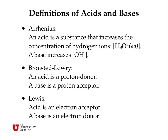There are three definitions of acids and bases. The simplest is from Arrhenius, where an acid increases the concentration of hydrogen ions, written as H3O+, and a base increases the concentration of hydroxide. The Bronsted-Lowry definition is the most practical and common, where an acid is a proton donor and a base is a proton acceptor. There is also a third definition based on Lewis acids and bases, where acids are electron acceptors and bases are electron donors.